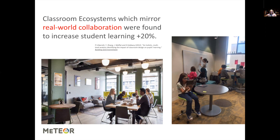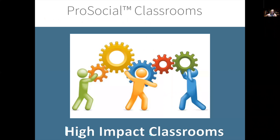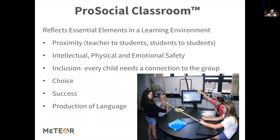Thinking on transformation, we want to look at the pro-social classroom. At Meteor, we refer to these high-impact classrooms as pro-social. A pro-social classroom focuses on being deliberate and intentional, including specific elements in the learning environment. We believe there should be proximity — teachers to students and students to students. There should be intellectual, physical, and emotional safety. Inclusion — every child needs a connection to the group. Choice — student choice. There needs to be a success element where students feel successful, or where their failures lead to success. And it's all about production of language — showing their learning through writing or speaking.